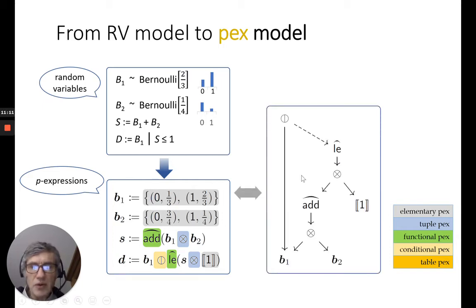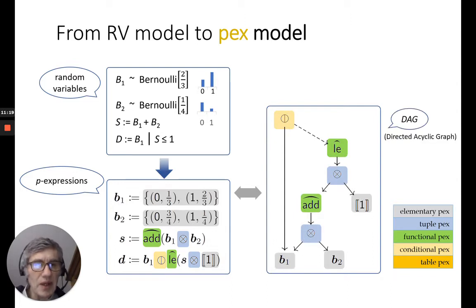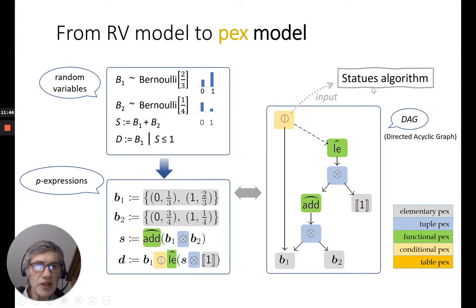So, this small PEX expression model could be represented as a tree, not really a tree. It's DAG, a direct acyclic graph, as here. It's something very common in probabilistic modeling. Actually, sometimes we call about a graphical model for this kind of structure. And the goal then is to give the root PEX here, the conditional PEX, to the algorithm, the statues algorithm, to evaluate the resulting probability distribution.